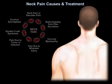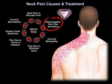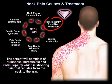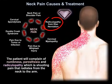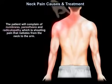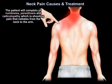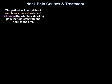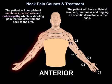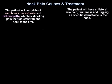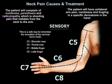An important cause of neck pain is disc herniation. The patient will complain of numbness, paresthesia, and radiculopathy, which is shooting pain that radiates from the neck to the arm. The patient will have unilateral arm pain, numbness, and tingling in a specific dermatome in the hand, as seen in this diagram.